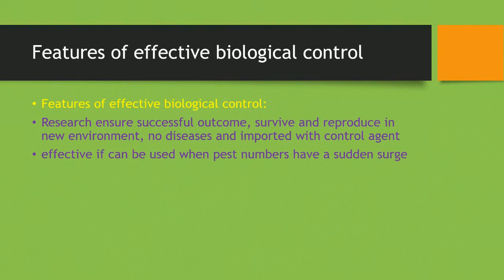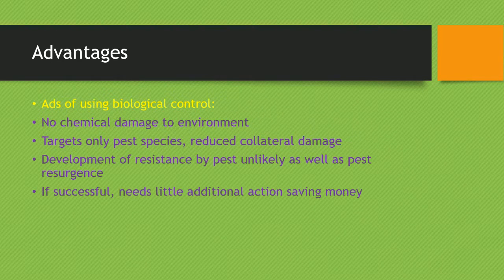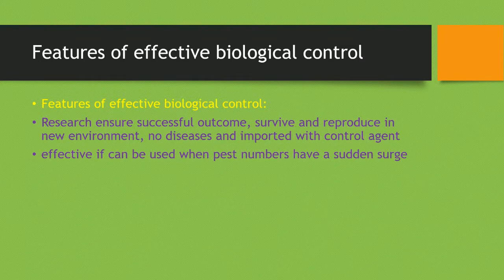There are key features of an effective biological control. Carrying out a lot of research will ensure a successful outcome. The control agent must be able to survive and reproduce in a new environment, with no diseases imported with it. It can also be effective if used when pest numbers have a sudden surge.